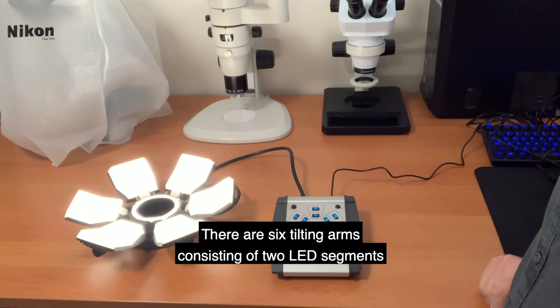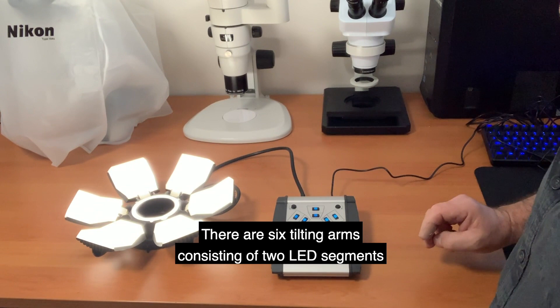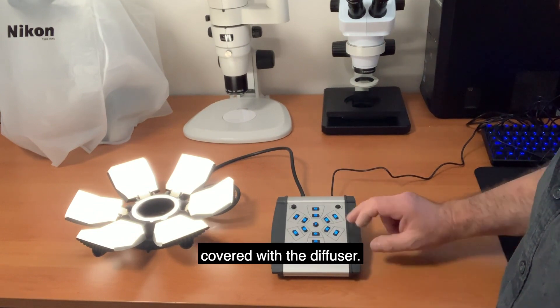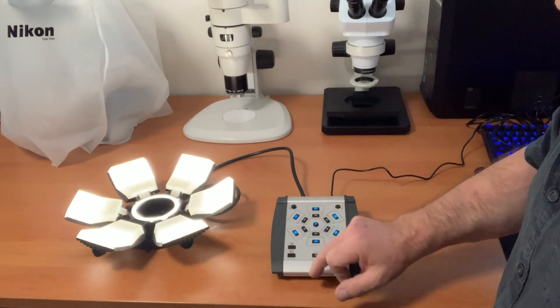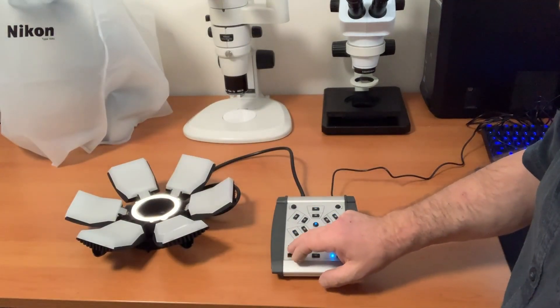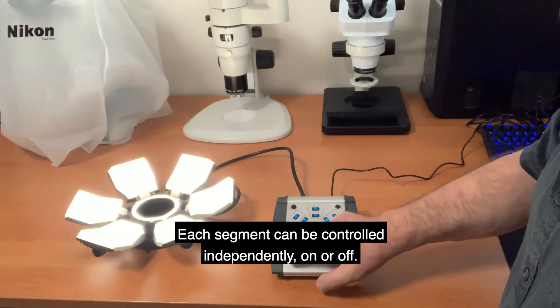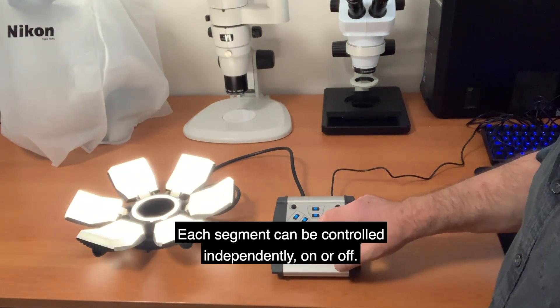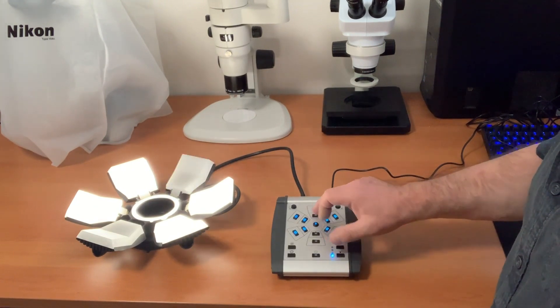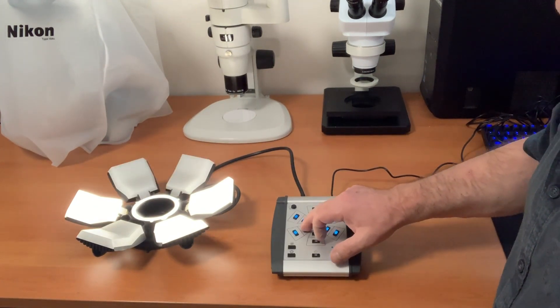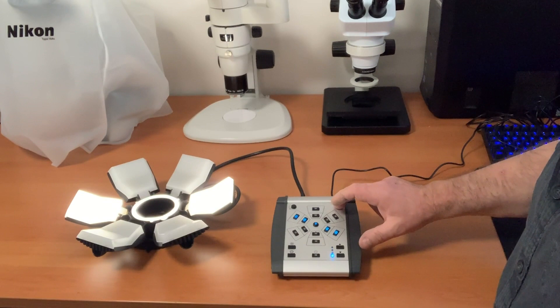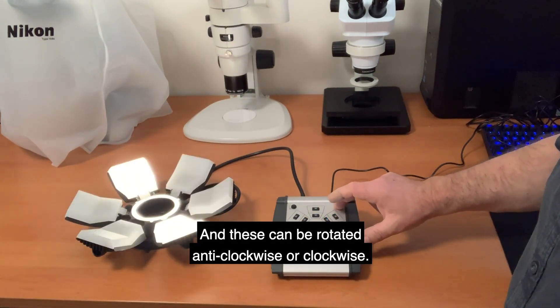There are six tilting arms consisting of two LED segments covered with a diffuser. Each segment can be controlled independently on or off. These can be rotated anti-clockwise or clockwise.